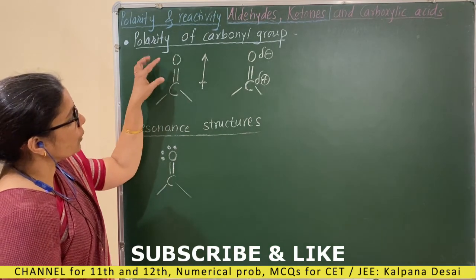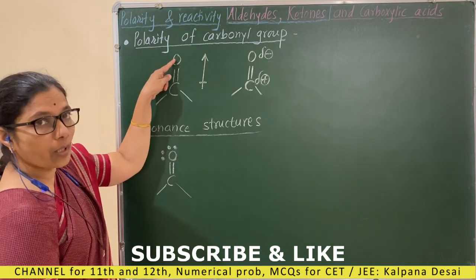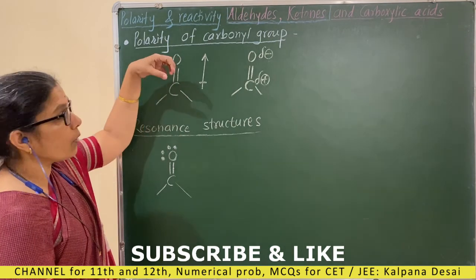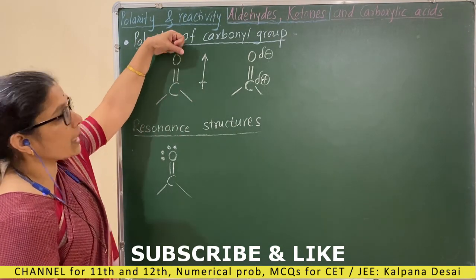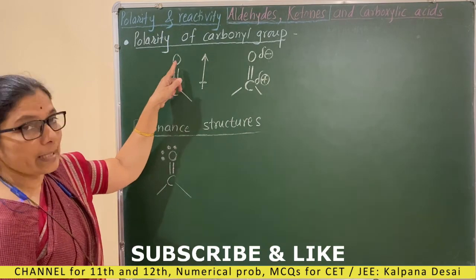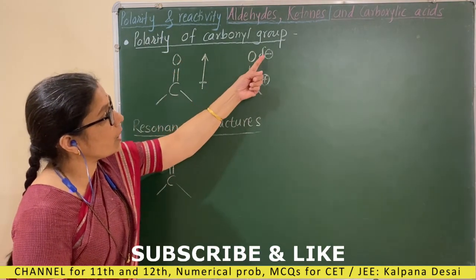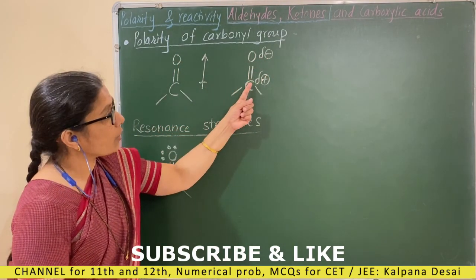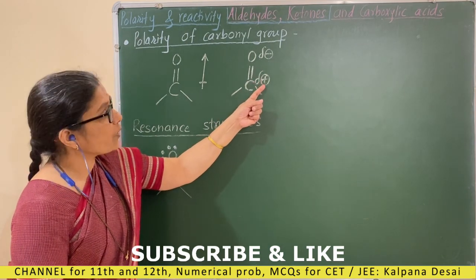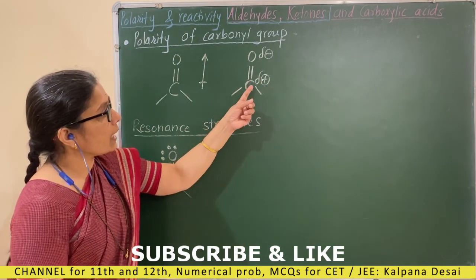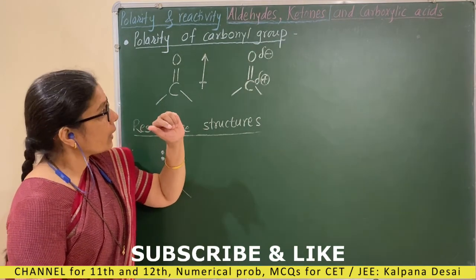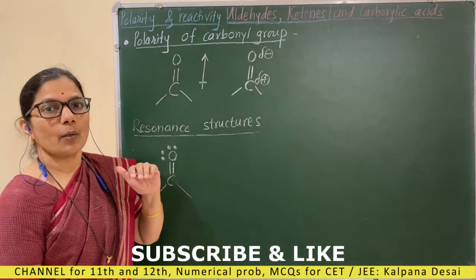You know that the carbonyl group has a carbonyl carbon and carbonyl oxygen. Oxygen is more electronegative — it withdraws and pulls the electrons towards itself. Therefore, electron density increases on oxygen giving a partial negative charge, while here electron density decreases giving a partial positive charge on the carbon. That is the inductive effect.